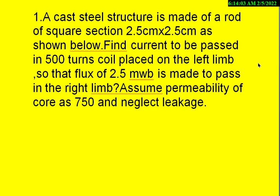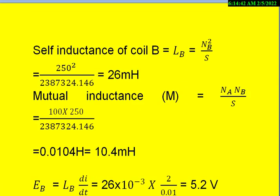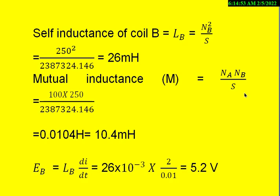So let me summarize what we have seen here. We have seen how the parallel magnetic circuit can be analyzed. Calculate the total current to be passed to meet the required flux density or flux in the core. Similarly, we have seen the two windings wound on the same core. And we found what is the mutual inductance, what is the self-inductance of coil A and coil B. And we also found what is the voltage induced in coil B using the given data and formulas.